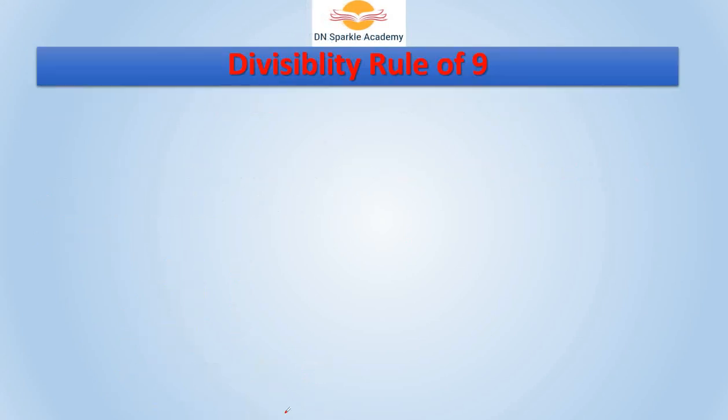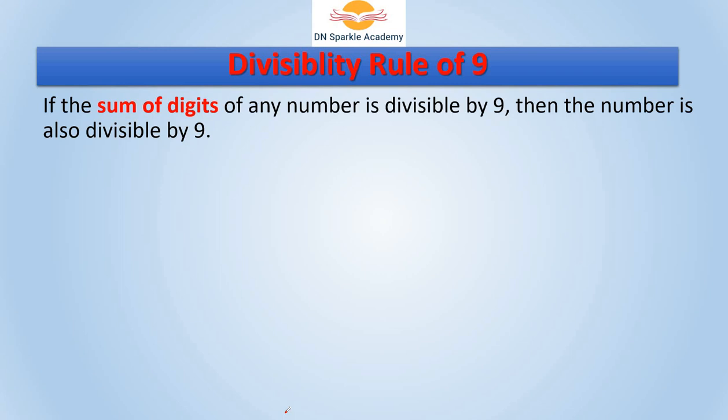Next is the divisibility rule of 9. The rule is: if the sum of the digits of any number is divisible by 9, then the number is also divisible by 9. Let's understand by example.